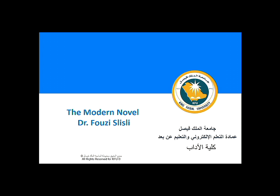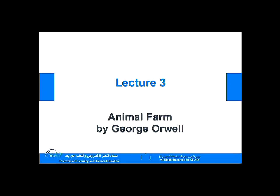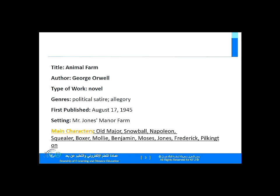Today I propose to look at a famous modernist novel and we'll try to see how some of the ideas we discussed about modernism apply or do not apply on some modernist novels or modernist texts. The novel that I propose to look at is Animal Farm by George Orwell. It's a very famous novel that provoked extensive discussion in the 20th century. The title is Animal Farm, the author is George Orwell.